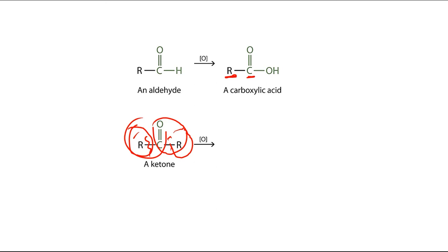Because there is fragmentation, the number of carbon atoms in the carboxylic acid product will be decreased. Now, how do we know which C-C bond will be broken? To answer this question, we will categorize ketone compounds into two types.